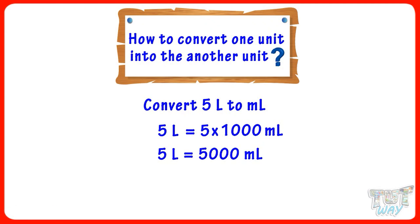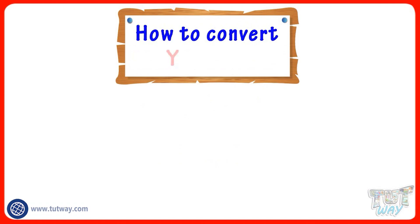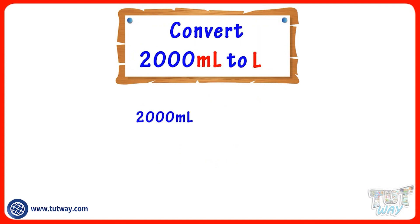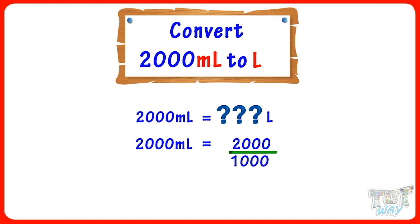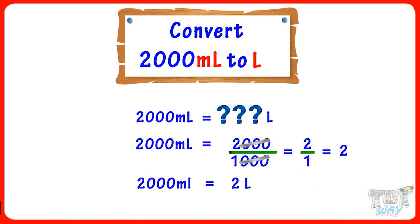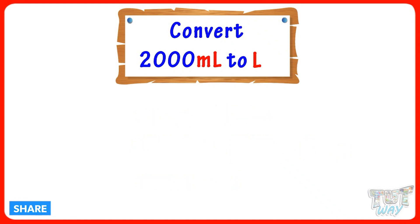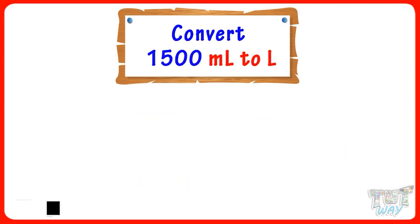2000 milliliters is equal to how many liters? 2000 milliliters equals 2000 divided by 1000 liters. Cutting the 3 zeros, we get 2 divided by 1, which equals 2. So 2000 milliliters equals 2 liters.